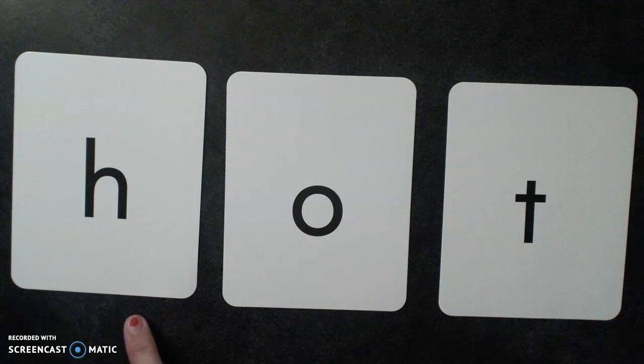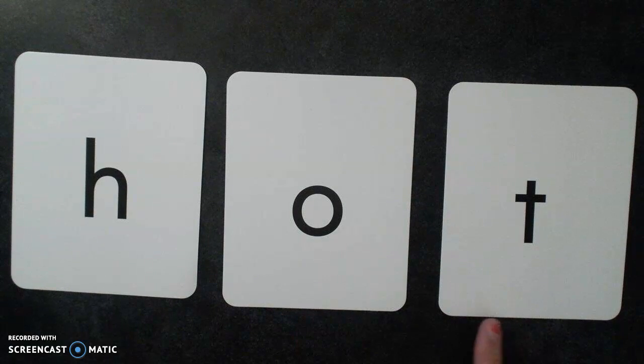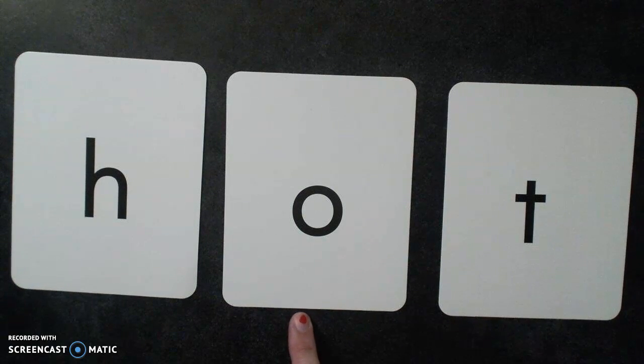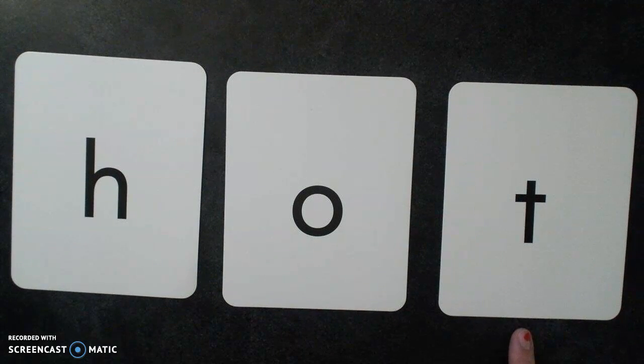Alright, so first we have an H that makes the H sound. An O, since it's the only vowel and followed by a consonant, it makes the short AH sound. And our T makes the T sound. So let's blend this word together.